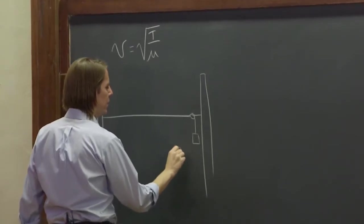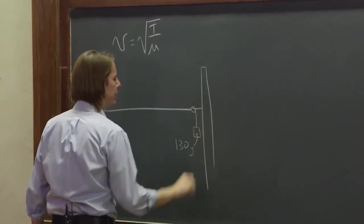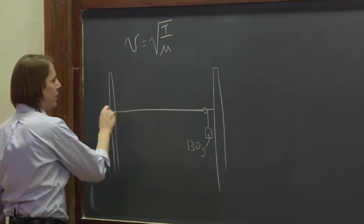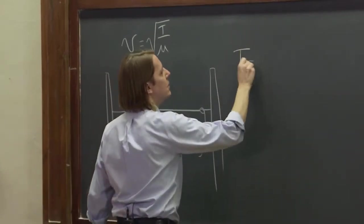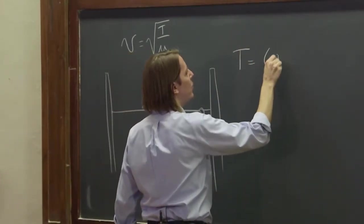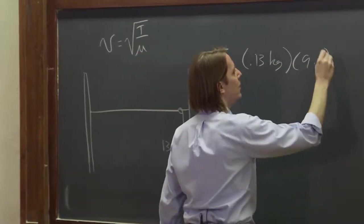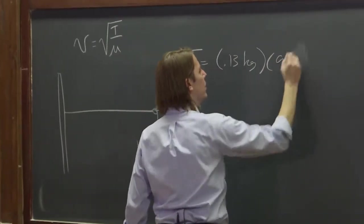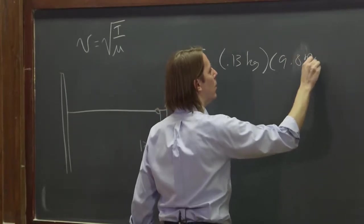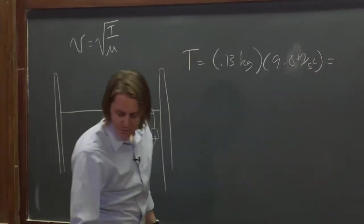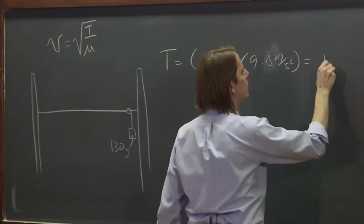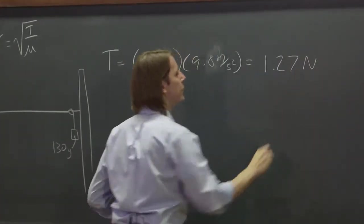Hanging off of here is 130 grams. So it's going to have a tension T equals the mass 0.13 kilograms times gravity 9.8 meters per second squared. The tension is 1.27 newtons in the string.